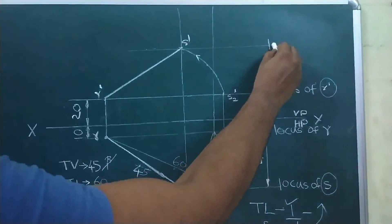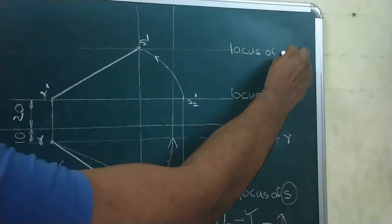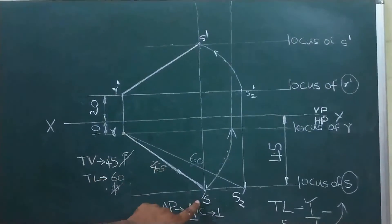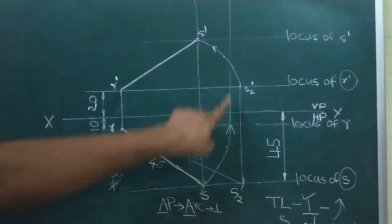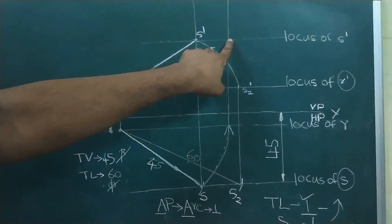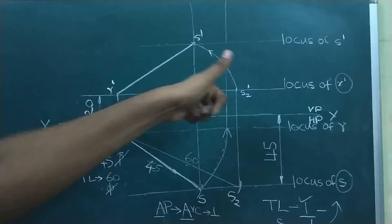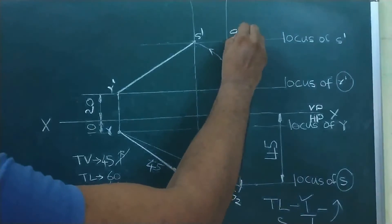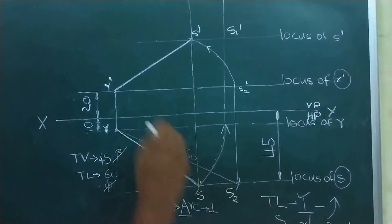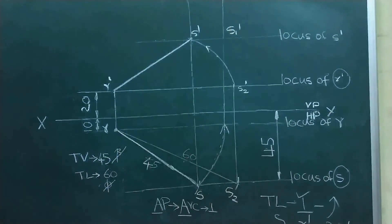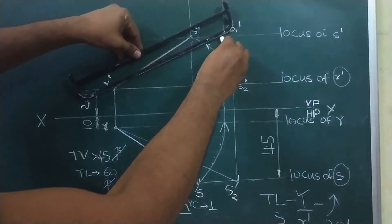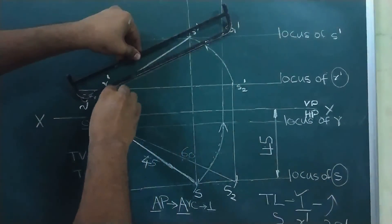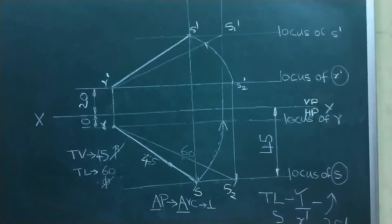One more intersection is also there — that is the front view true line end point, named S1-dash. Join R-dash and S1-dash — that is our true line.